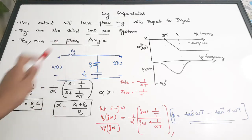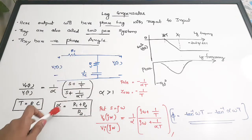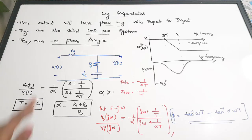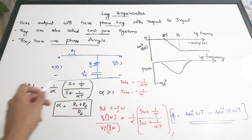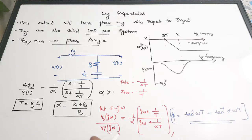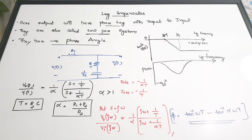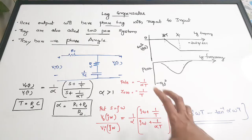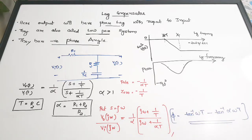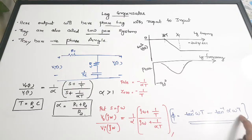You can also find the values of T and α in terms of circuit components: T = R2·C, and α = (R1 + R2)/R2. These equations are important for solving numerical questions. To find the phase angle, substitute s = jω into the transfer function, giving Vout(jω)/Vi(jω) = (1/α)(jω + 1/T) / (jω + 1/αT). The phase angle is φ = tan⁻¹(ωT) − tan⁻¹(αωT), which is a very important equation.